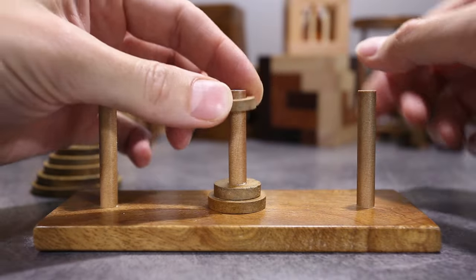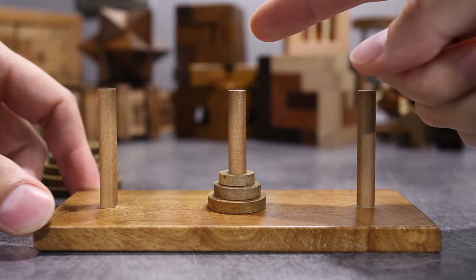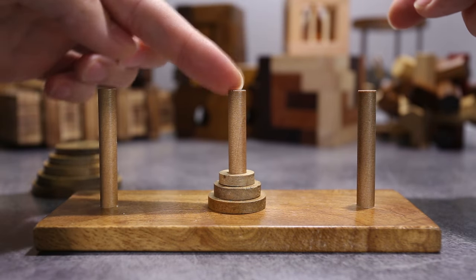And then it goes to the second. So the small disc always goes one, two, three, one, two, three.